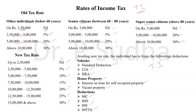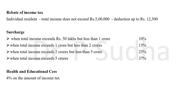If he is following the old tax rate, he can claim all the deductions and on that total income he will calculate the tax at the old rate. After calculating the amount of tax based on the rate specified, the next is rebate. Rebate will be applicable for individuals whose income does not exceed 5 lakhs — if the total income of the individual does not exceed 5 lakhs, he can claim a deduction of up to 12,500 as rebate.